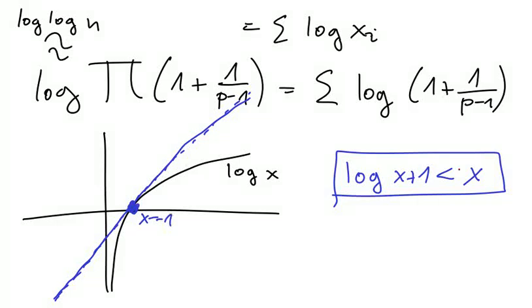So using this, we know that this is bounded by sum over 1 over p minus 1, which is roughly the same as 1 over p. Now 1 over p minus 1 and 1 over p, there is no difference between.